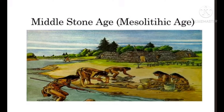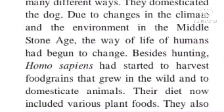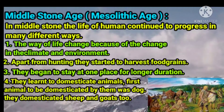In the Middle Stone Age, the life of homo sapiens continued to make progress in many different ways. They learned to grow crops, settle in one place, and build houses to protect themselves. Apart from hunting, they also started harvesting food grains that grew in the wild, included different types of plants in their day-to-day diet, and began to stay in one place for a very long period of time. They also learned to capture wild animals and domesticate them — the first animal domesticated was the dog, followed by sheep and goats.